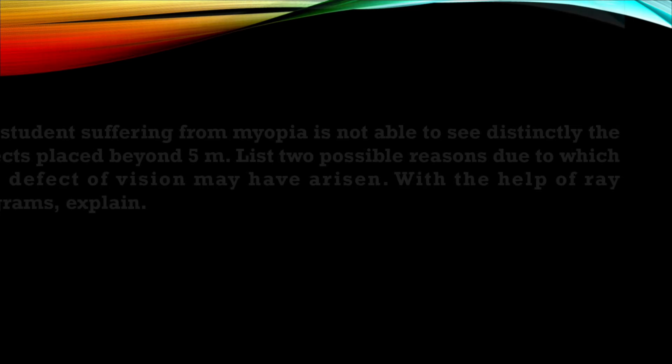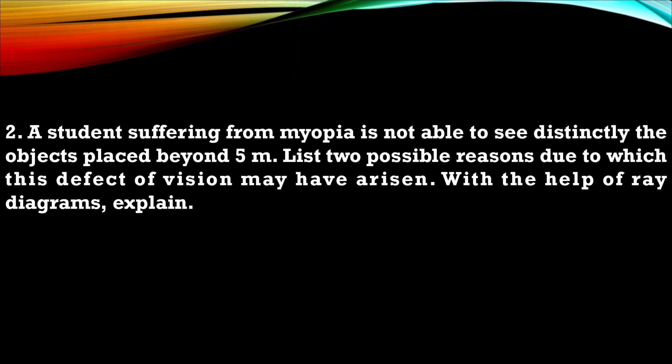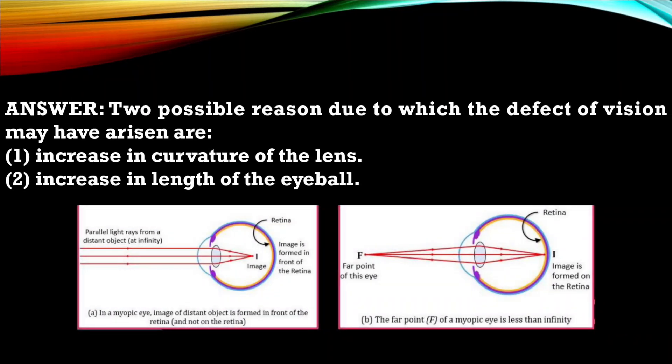Next question. A student suffering from myopia is not able to see distinctly the object placed beyond 5 meter. List two possible reasons due to which this defect of vision may have arisen. With the help of ray diagram explain. This is the solution and ray diagram of myopia and make sure you draw this diagram with pencil only. Pen is not allowed and write your answers in points.